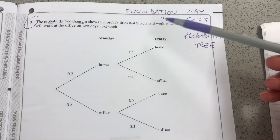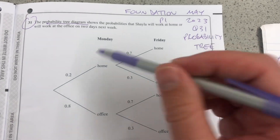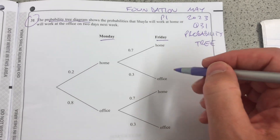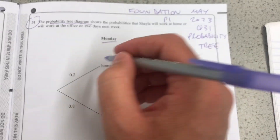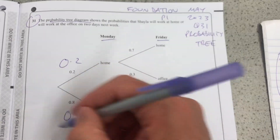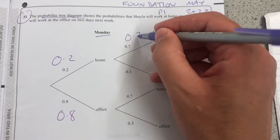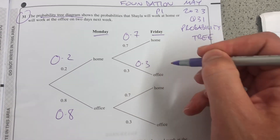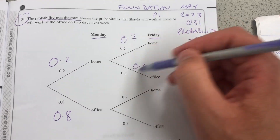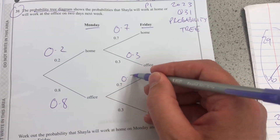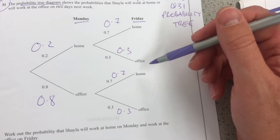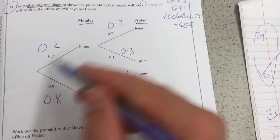This tree diagram shows the probabilities that Shaila will work at home or at the office on a Monday and a Friday. Home or office are the options. Each probability is written there: 0.2 that they'll work at home on a Monday, 0.8 at the office — those have to sum to 1. Then 0.7 at home or 0.3 at the office on a Friday, given that they worked at home on a Monday — those also have to sum to 1, so 0.7 or 0.3. The probability of working at home or in the office is almost independent of what they've done on a Monday.